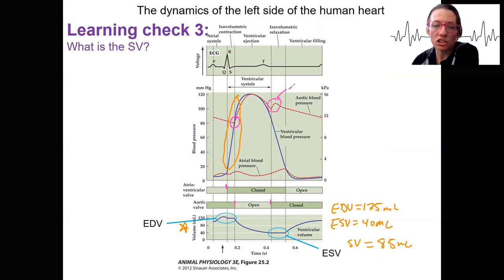there's this dicrotic notch seen in the aortic blood pressure. That's a result of that aortic valve closing. Then we have the AV valves open again so that the ventricles can fill.